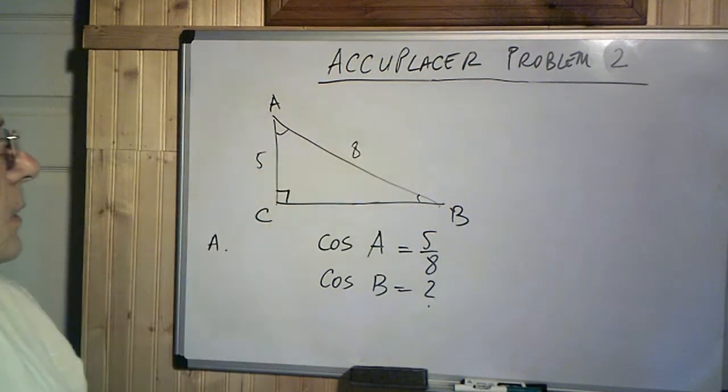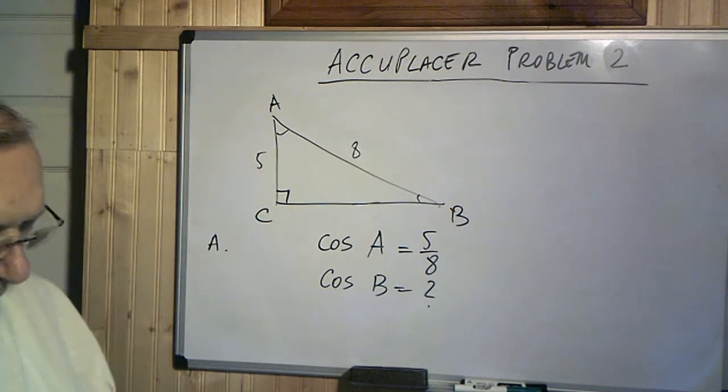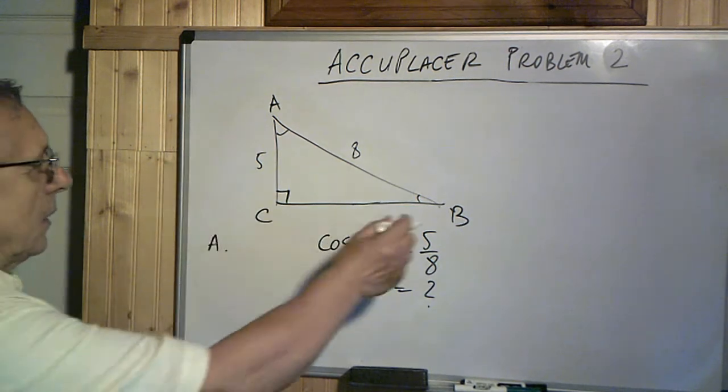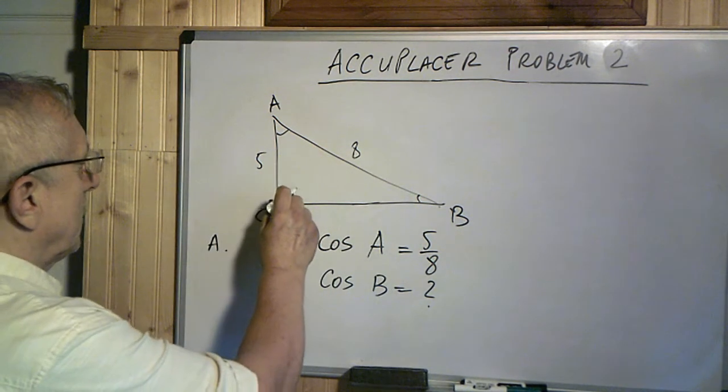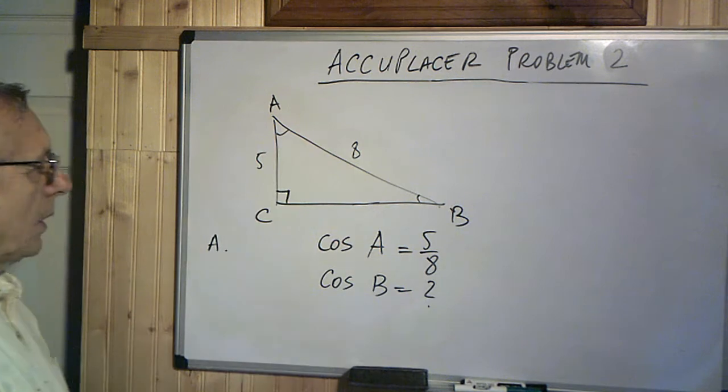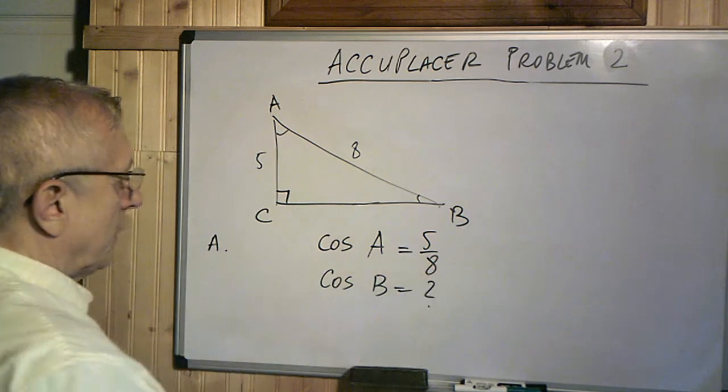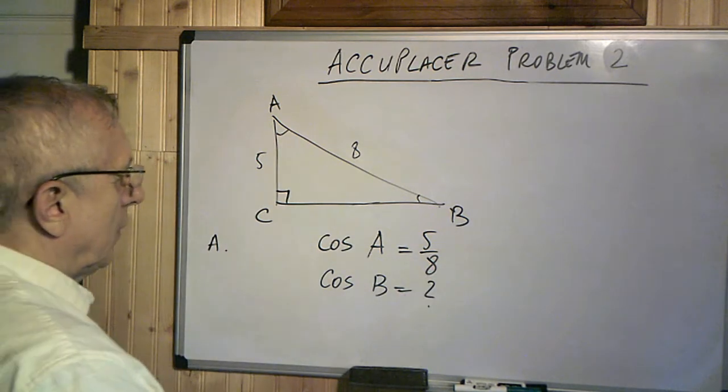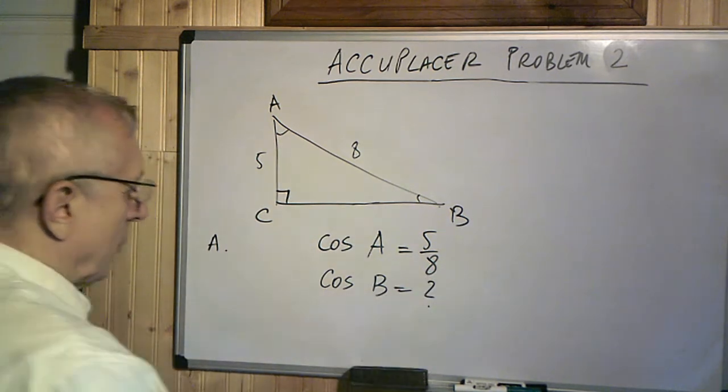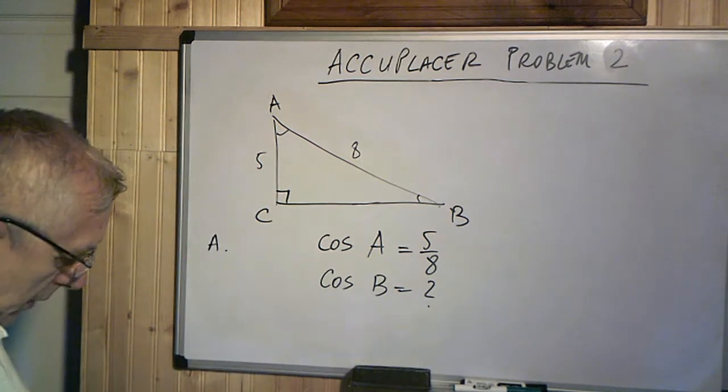Let's do a second problem given at an Accuplacer test. It's about a right-angled triangle. This is the 90 degrees angle here. And we know that cosine of angle A is 5 over 8, and cosine of angle B should be found by us right now.